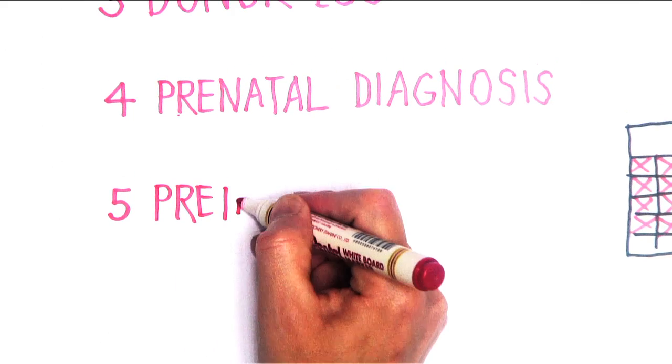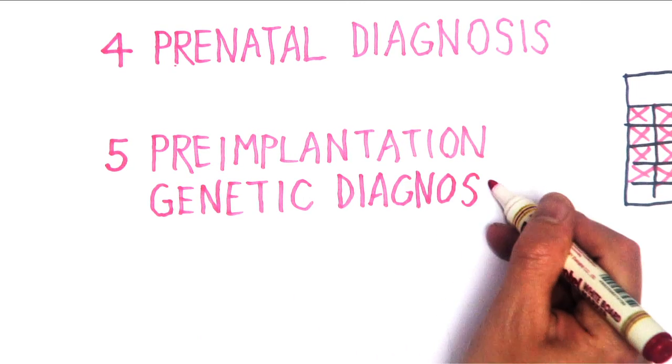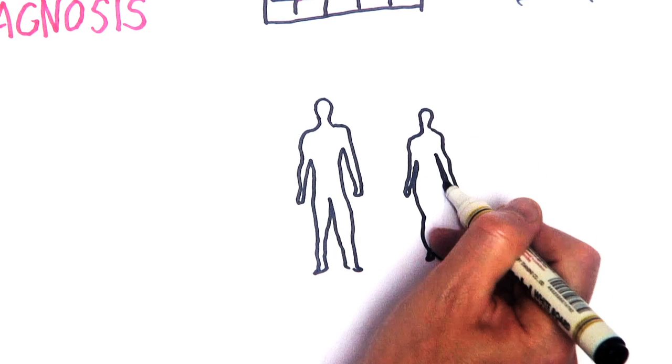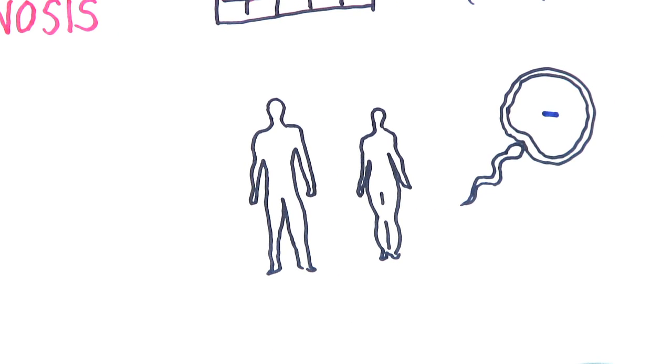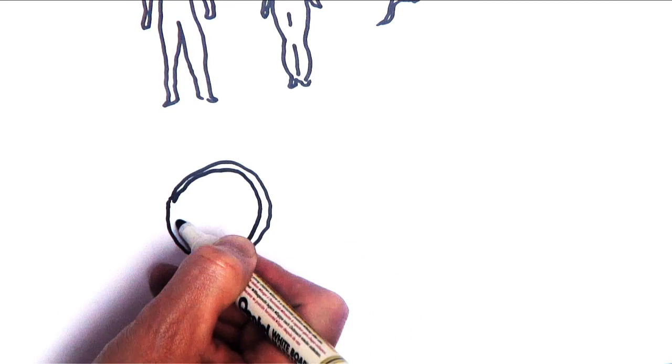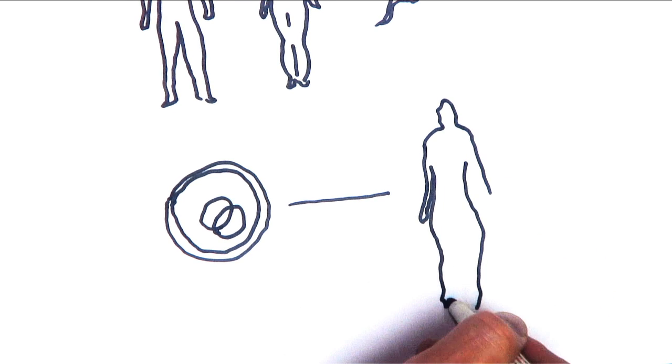Five, they can opt for pre-implantation genetic diagnosis. This involves a couple undergoing IVF and the resulting embryos can be tested at just a few hours old. Then, only the healthiest embryos with the lowest level of mutation are returned to the mother.